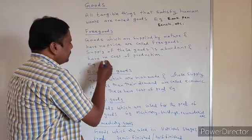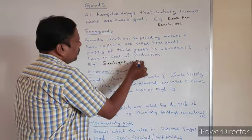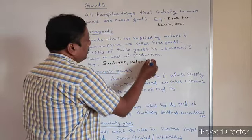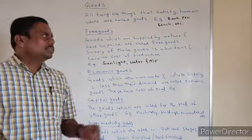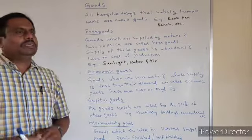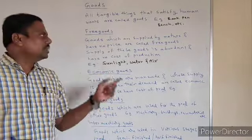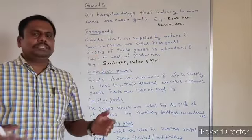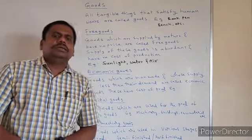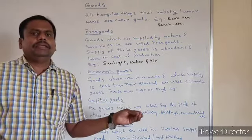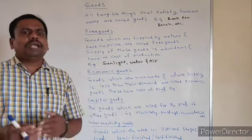Examples of free goods include sunlight and water. So what are free goods? The goods which are supplied by nature and have no price are called free goods. Their supply is abundant and they have no cost of production — you do not need to spend any money for producing such types of goods.